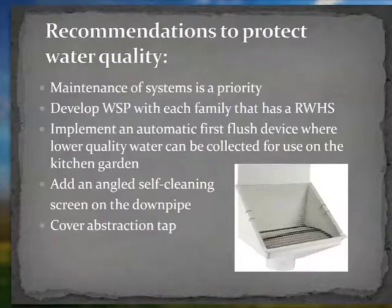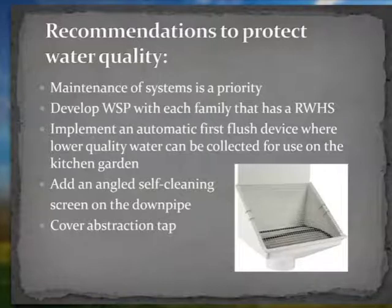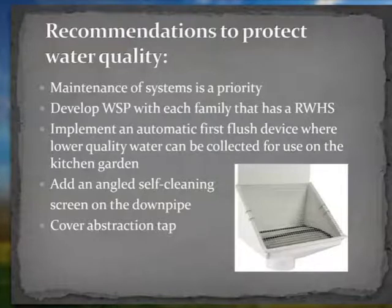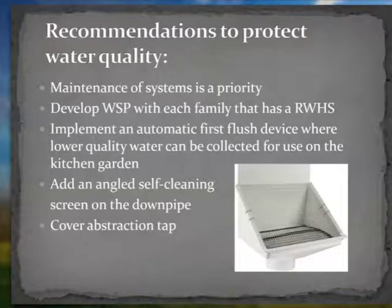The key recommendations to improve water quality include improving maintenance through education and by adopting the water safety plan process with each family. This will allow the family to develop a clear link between tank maintenance, water quality and family health and wellbeing. The first flush system needs to be able to divert water automatically and capture the water for reuse on the kitchen garden or other lower quality demands. Having an angled screen on the downpipe will remove debris and reduce organic matter at the tank — cheap and effective in reducing maintenance and improving water quality. It is also recommended to cover abstraction taps, as animals are able to lick the tap and may contaminate the water.